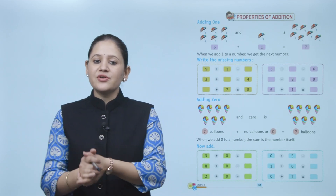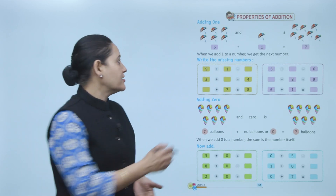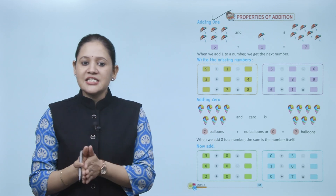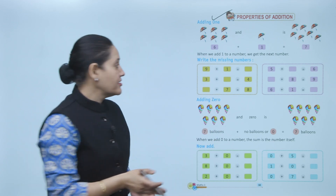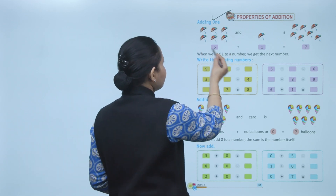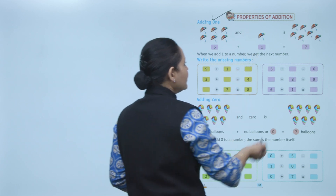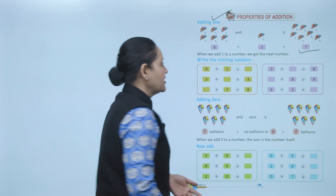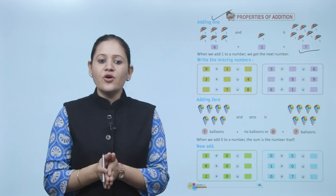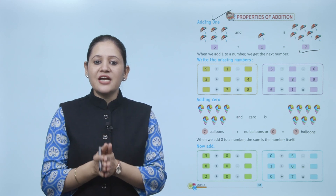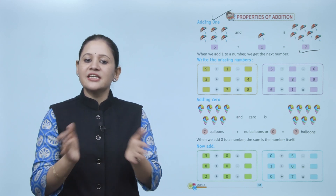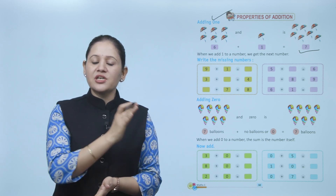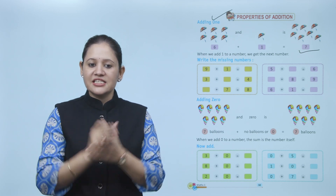Next are properties of addition. Adding one: six umbrellas plus one umbrella equals seven umbrellas. When we add one to a number we get the next number. Whenever we add one to the given number we will get the next number.